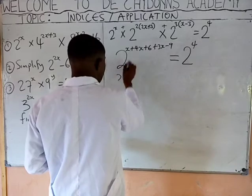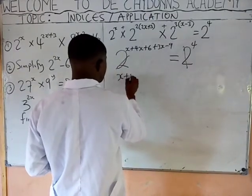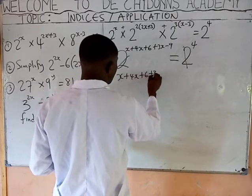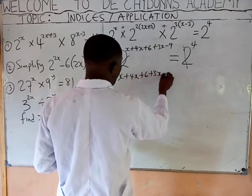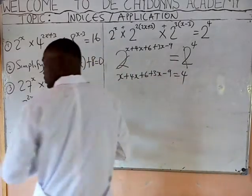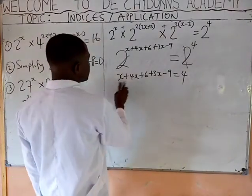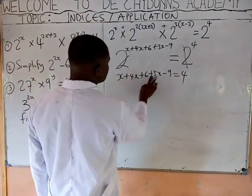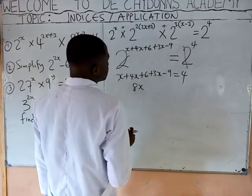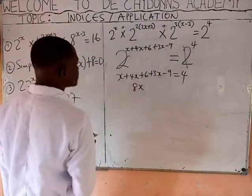We cancel the bases. X plus 4X plus 6 plus 3X minus 9 equals 4. Then X plus 4X is 5X, plus 3X is 8X. And 6 minus 9 is minus 3.